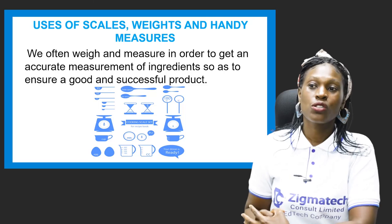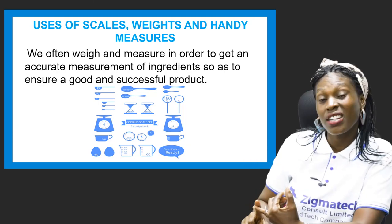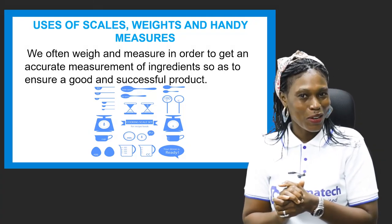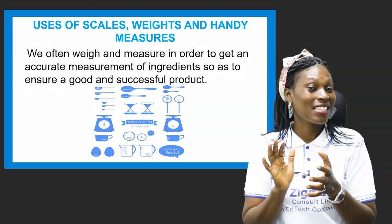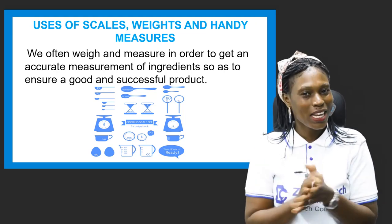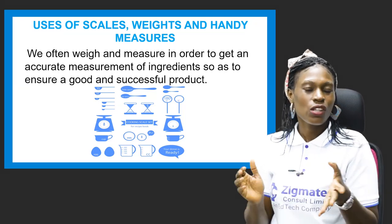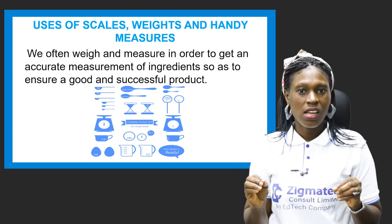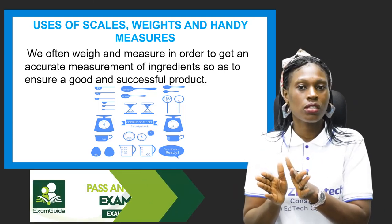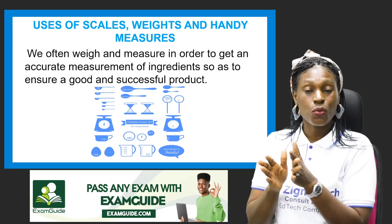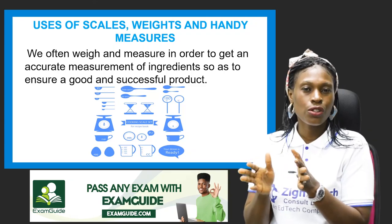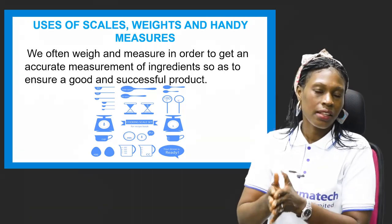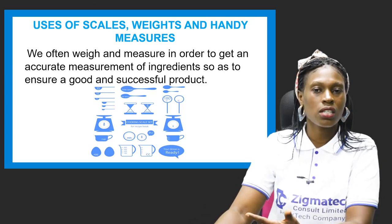We often weigh and measure in order to get accurate measurements of ingredients, so as to ensure good and successful products — whether that's buns, donuts, ice cream, or whatever you like. We have different measuring tools to achieve that. Looking at the screen, you can find your spoons, your balance scale, and other tools. You use any of these depending on whatever you're preparing.